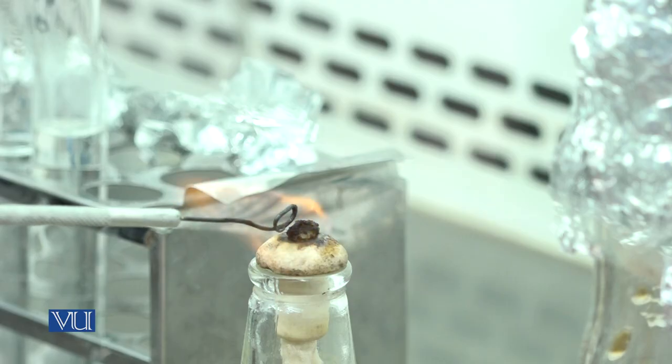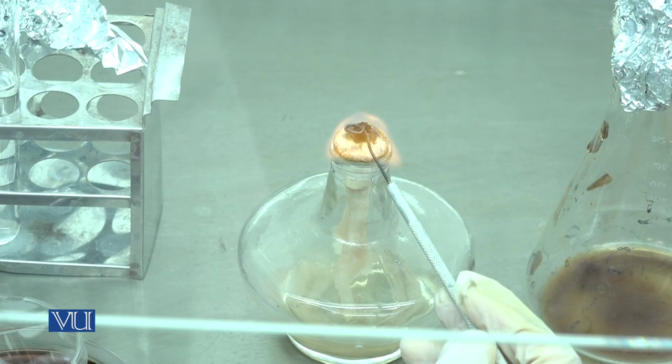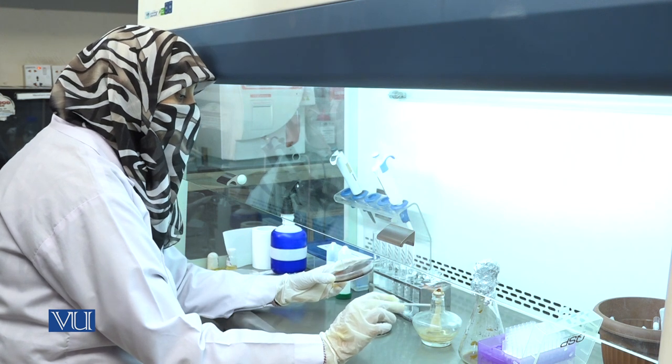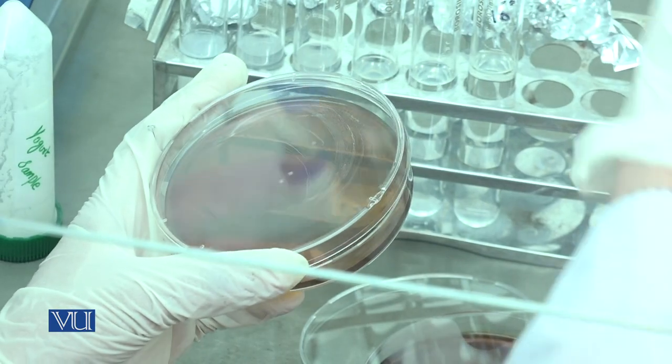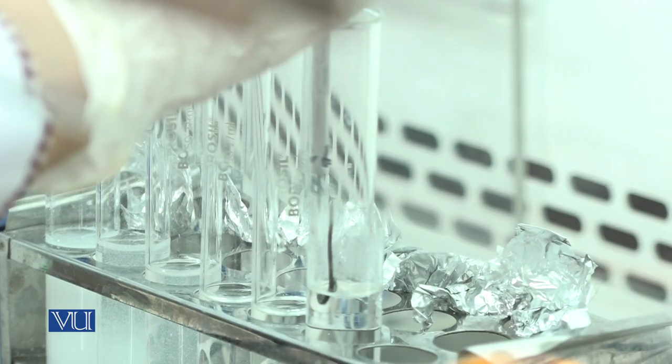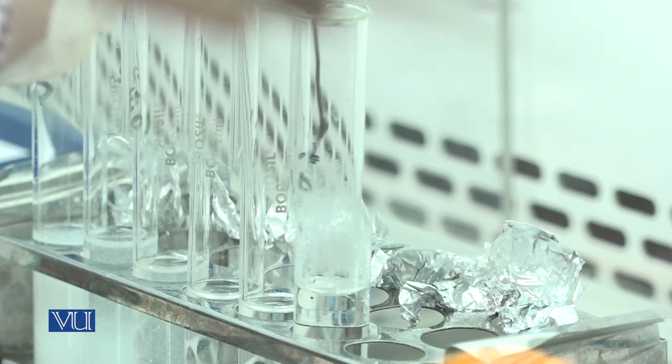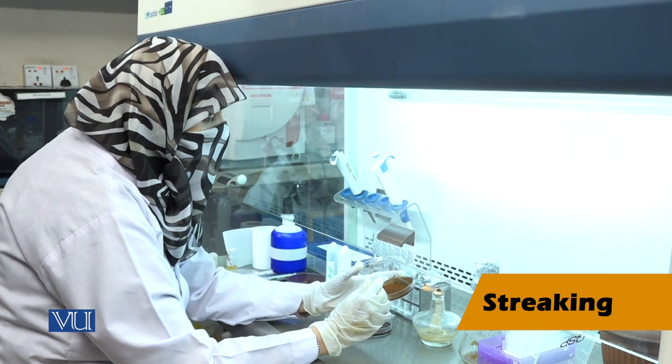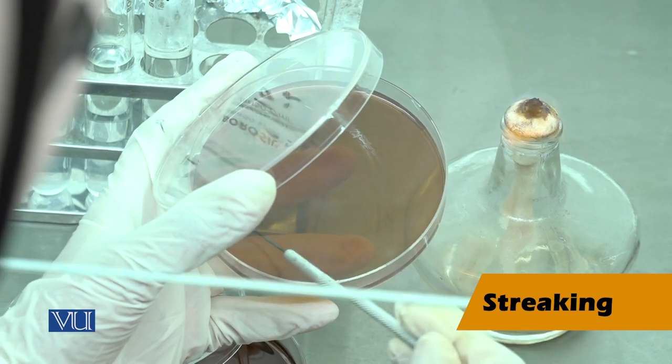Flame this inoculating loop to red hot and allow it to cool for 1 to 2 minutes. After cooling, dip the loop in 10 raised to minus 6 dilution and carefully streak plate in a zigzag manner.